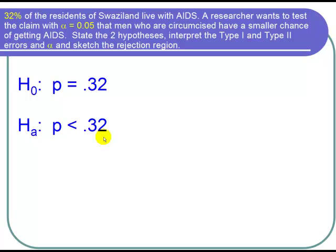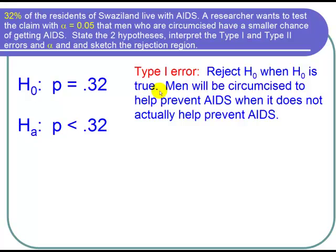A type 1 error means that we reject the null hypothesis when the null hypothesis is true. So we would reject that P equals 0.32 and accept that P is less than 0.32. We would think that circumcision is helpful for preventing AIDS and end up circumcising more men to prevent AIDS in Swaziland, when in fact P equals 0.32 and it doesn't actually help prevent AIDS at all. It would result in men getting circumcised when they don't need to.